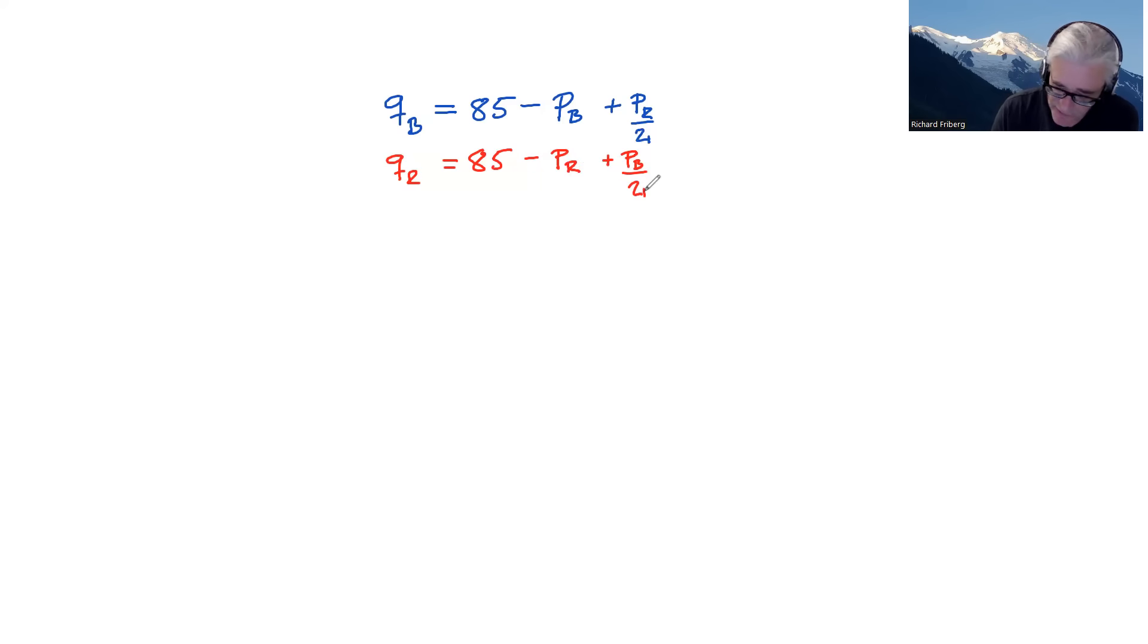Okay, we assume that marginal cost for both firms equals 11. Each unit costs 11 to produce. Now remember, the quantity is given by this full expression. So the total cost, if we're saying fixed costs are zero, the total cost would be given by this whole thing times 11.